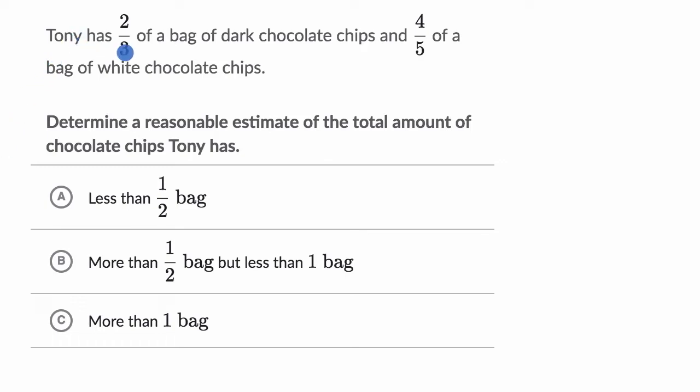We are told that Tony has two-thirds of a bag of dark chocolate chips and four-fifths of a bag of white chocolate chips. Determine a reasonable estimate of the total amount of chocolate chips Tony has.